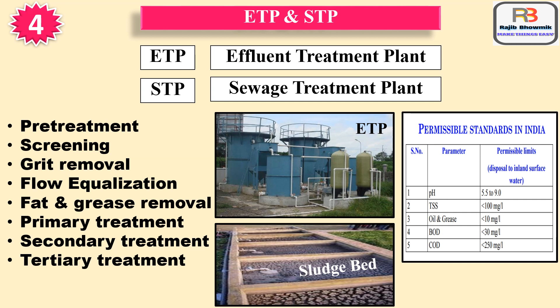After treatment, accumulated sludge is to be disposed of to PCB-approved agencies, and all necessary PCB rules are to be followed for storing and transporting the sludge. Treated water can be used for gardening, toilet flush, or drained to the common outlet drain of the organization.